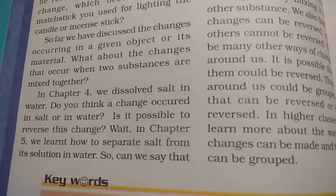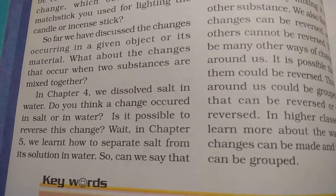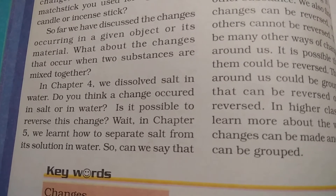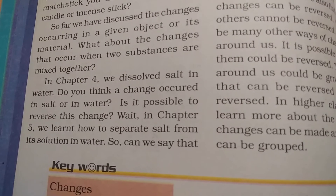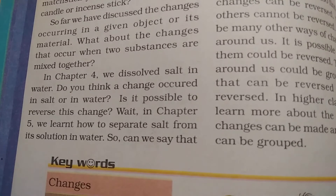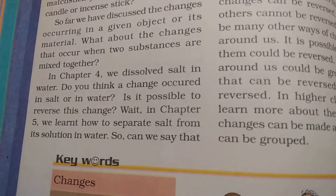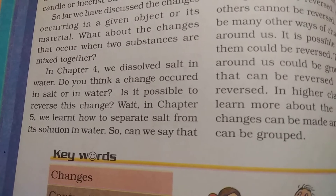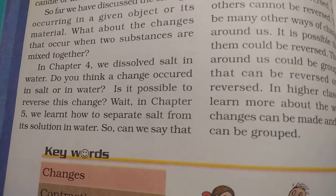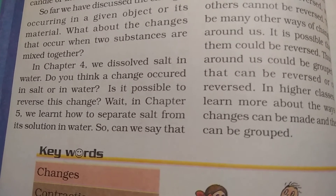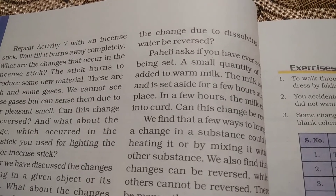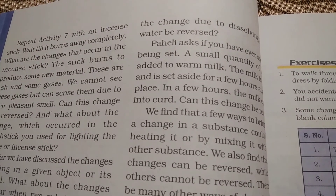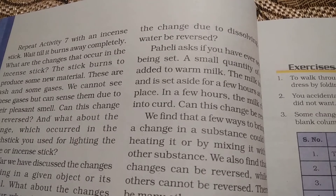In chapter 4 we dissolved salt in water. Here, two things undergo a change together — salt and water mix to form an aqueous salt solution. Is it possible to reverse this change? Yes. In chapter 5 we learnt how to separate salt from water by the method of evaporation. So the change due to dissolving salt in water can be reversed by applying heat energy — the water evaporates and we get the salt back.